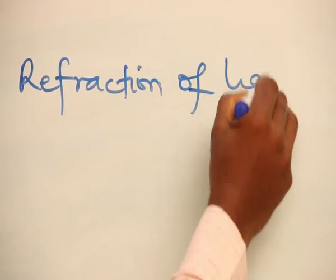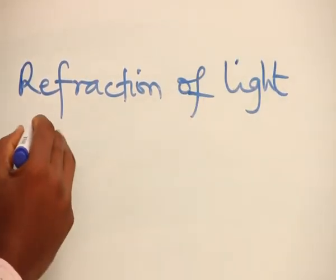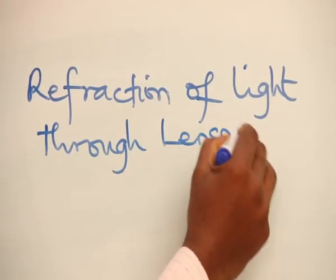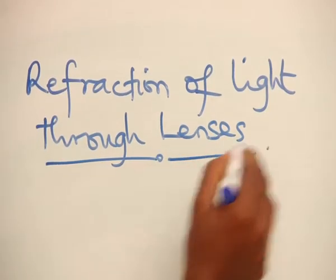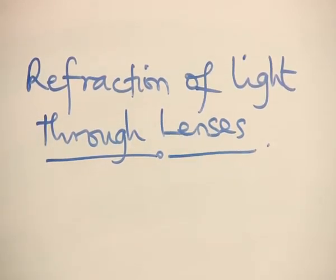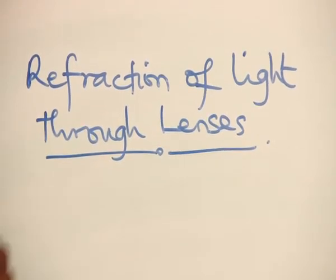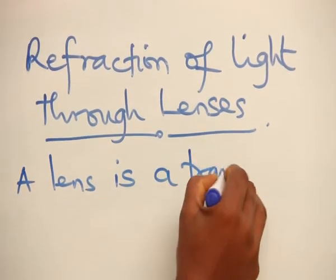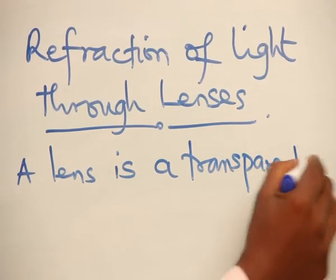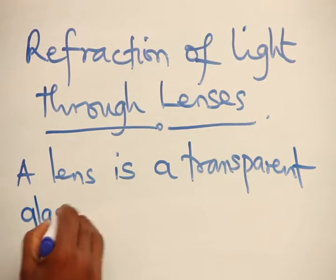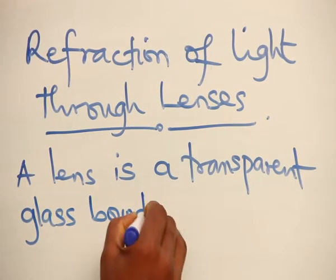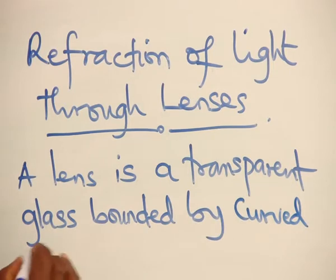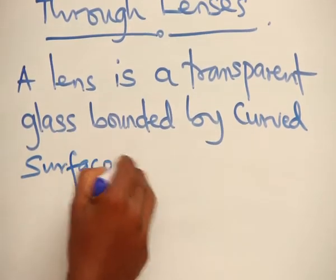Refraction of light through lenses. A lens is a transparent glass bounded by curved surface or surfaces, as the case may be.